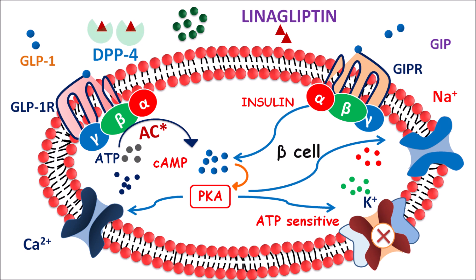When this enzyme is inhibited, the levels of GLP1 as well as GIP are increased, which enhances the binding of these incretins with their corresponding receptors, leading to increased secretion of insulin. In this way, linagliptin can increase insulin secretion as well as reduce glucagon secretion, by which it can reduce the blood glucose levels.